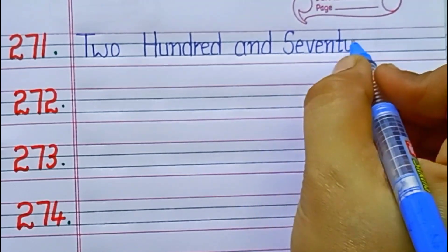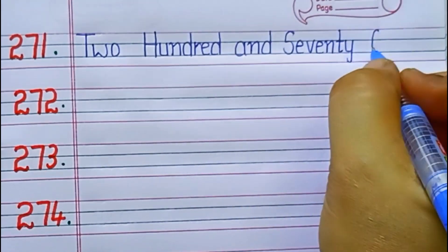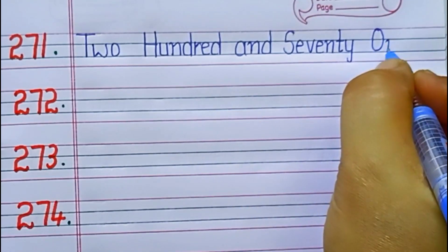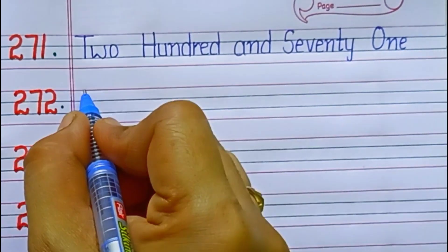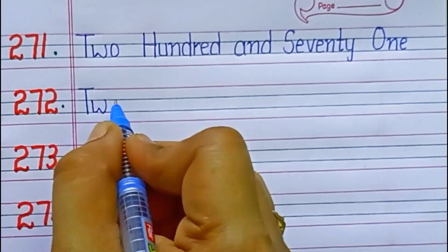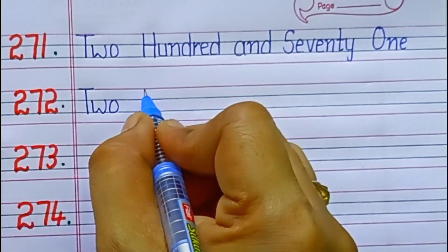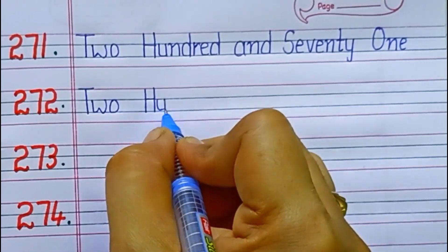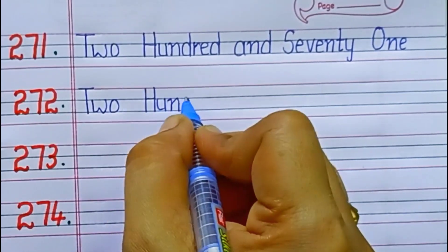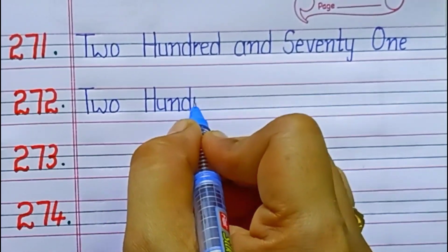271. S-E-V-E-N-T-Y, 70. O-N-E, 1. 71. Two hundred seventy-one.